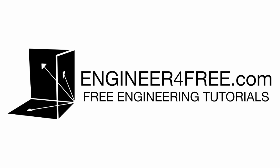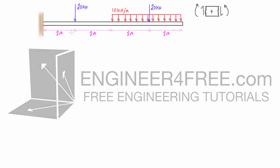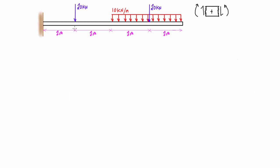Welcome back. You're looking at practice problem number four for drawing shear force diagrams and bending moment diagrams for various beams subject to various types of loads. In this case we have a couple of point loads and a distributed load starting and stopping at random places along the beam, and this is a cantilever beam.